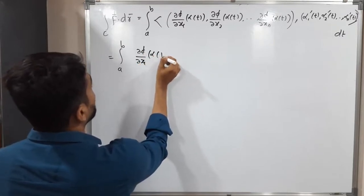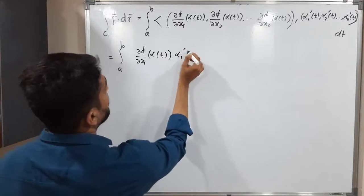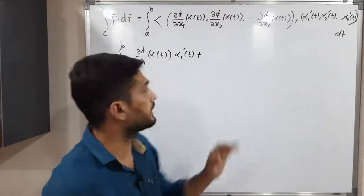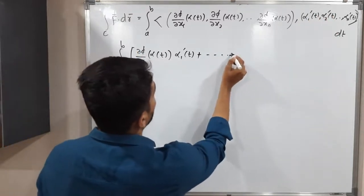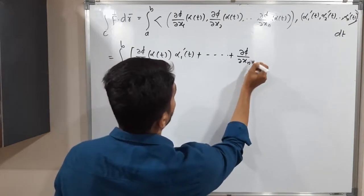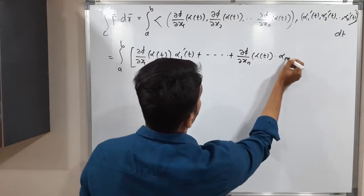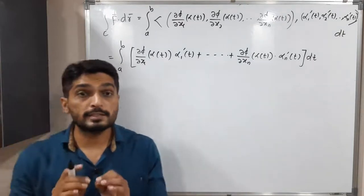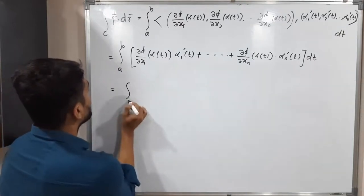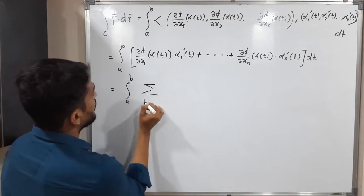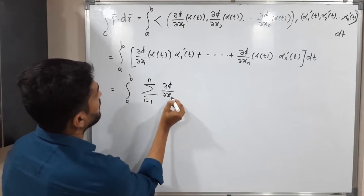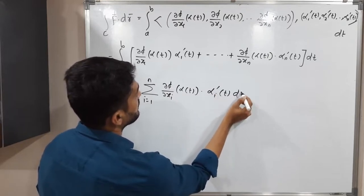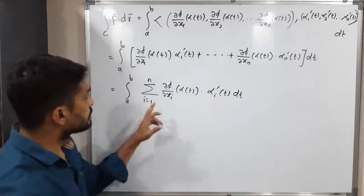Continuing, we add ∂phi/∂xₙ(alpha(t))·alphaₙ'(t) dt. This same expression can be written in summation form as: the integral from a to b of the summation, with i running from 1 to n, of ∂phi/∂xᵢ(alpha(t)) times alphaᵢ'(t) dt.